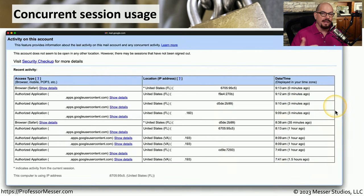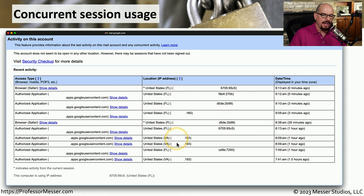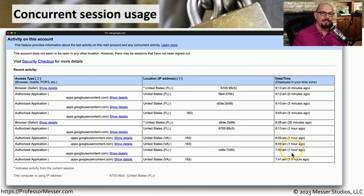Here's a report that I ran from my Google Mail account. It lists out all of the different types of access, the location with the IP addresses, and when this particular activity occurred. This can show me if I was the person logged in and using my account, or if there may be an account running elsewhere that has access to my mailbox.